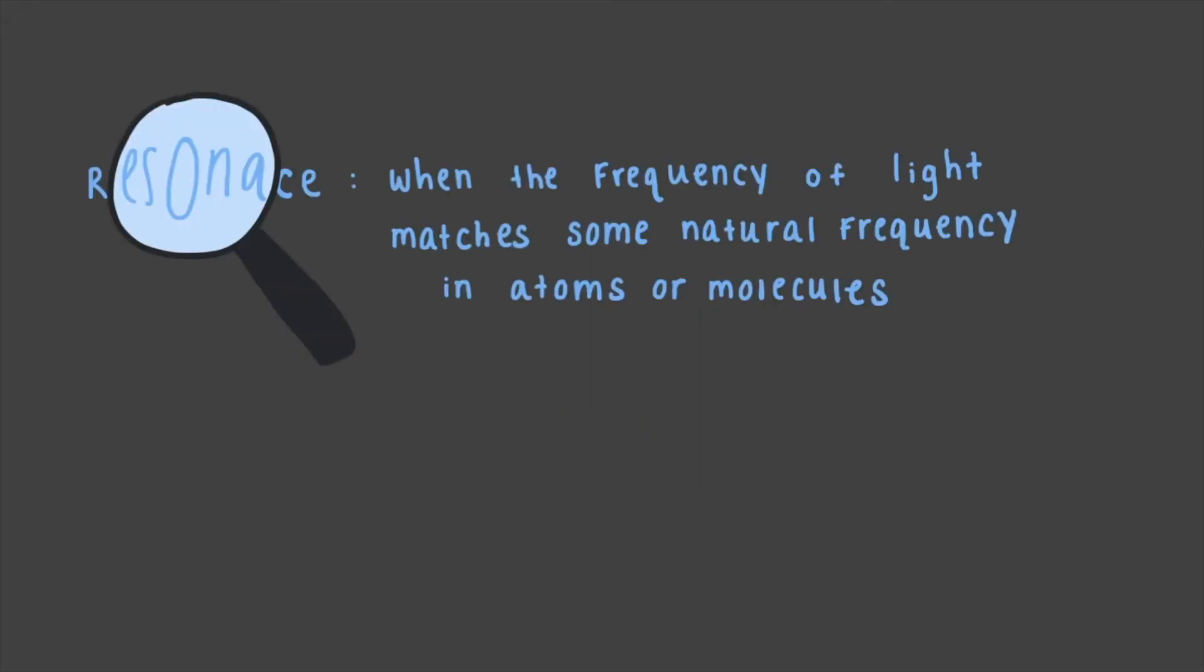Now let's take this concept of resonance and look at its role in chemistry. We will zoom in on the microscopic nature of matter and look at how atoms and molecules interact with light. Here, resonance is when the frequency of light matches some natural frequency in atoms or molecules.